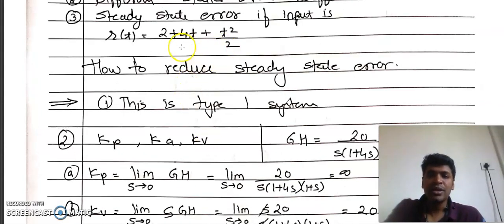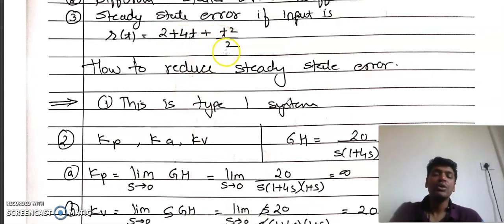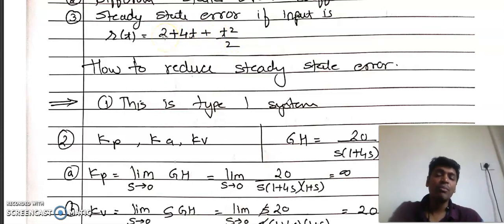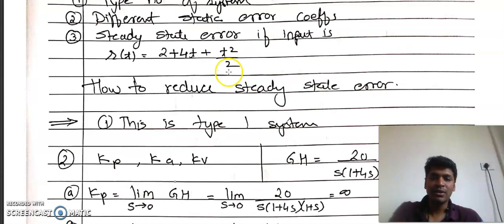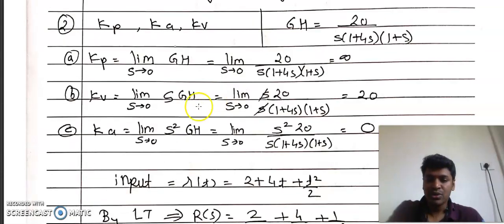The input is r(t) = 2 + 4t + t²/2, which is a combination of a unit step, ramp, and parabolic signal. Kp comes out to be infinity.